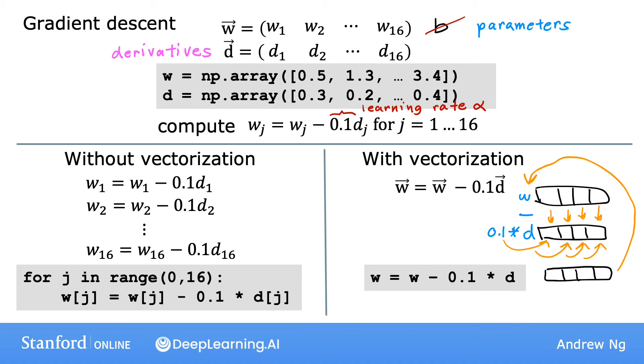Behind the scenes, the computer takes these numpy arrays, W and D, and uses parallel processing hardware to carry out all 16 computations efficiently. So using a vectorized implementation, you should get a much more efficient implementation of linear regression.